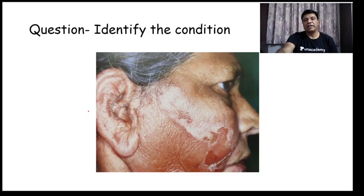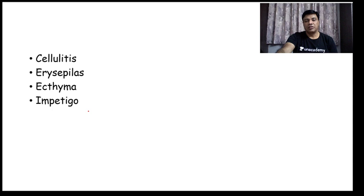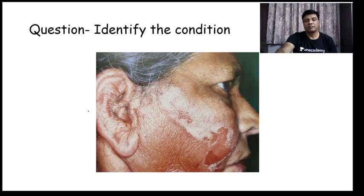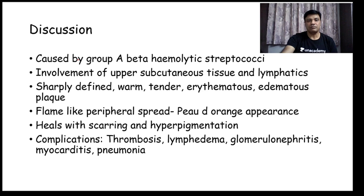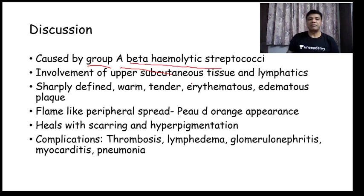Next question: identify the condition. Choices are cellulitis, erysipelas, ecthyma, and impetigo. The correct answer is this is a clinical case of erysipelas. Erysipelas is caused by group A beta-hemolytic Streptococci — it is a streptococcal infection.